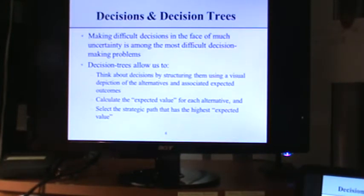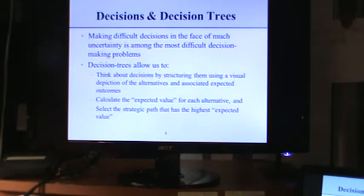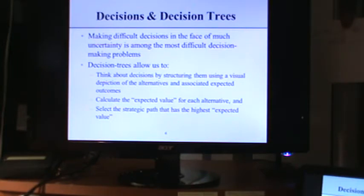Expected monetary value is fairly easy as long as you remember the sum product function from the early weeks. We're also going to do decision trees — we'll build the payoff table you just saw. In prior semesters I made students build the payoff table themselves, but this semester I'm giving you the payoff table for part two of your assignment. What I'm asking you to do is use Palisade's Precision Tree to produce a decision tree for the payoff table in part two.